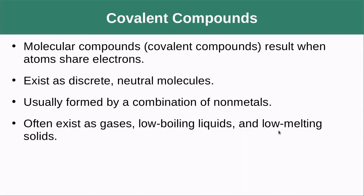Covalent or molecular compounds result when electrons are shared between atoms. They exist as discrete neutral molecules and are usually formed by a combination of nonmetals. They are often gases or liquids that boil easily, or at least low-melting-point solids.